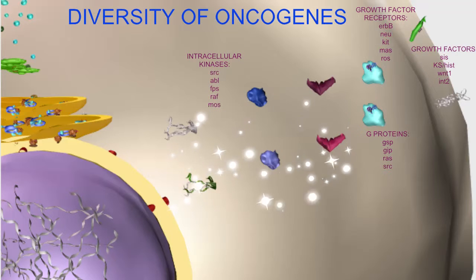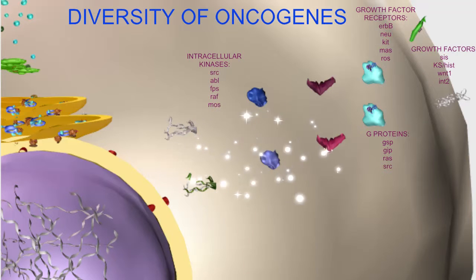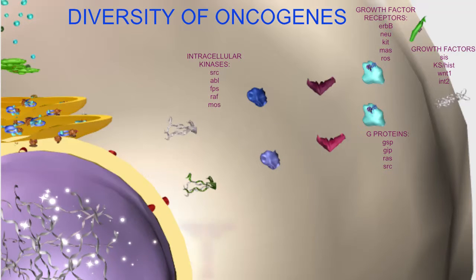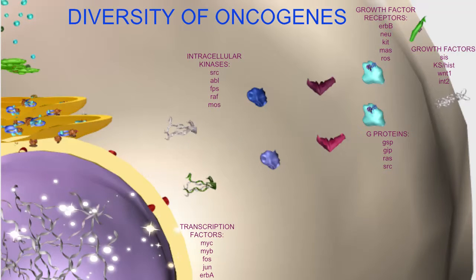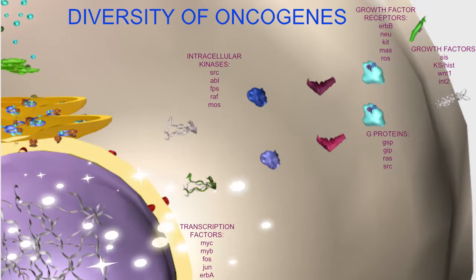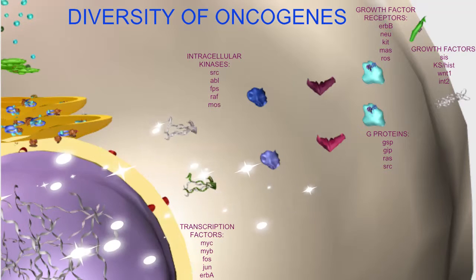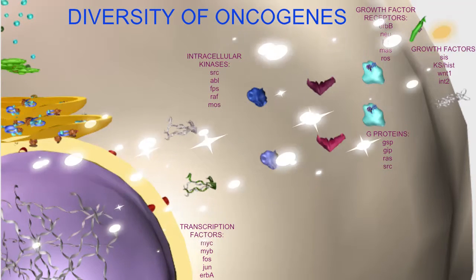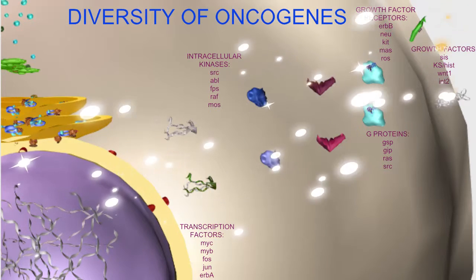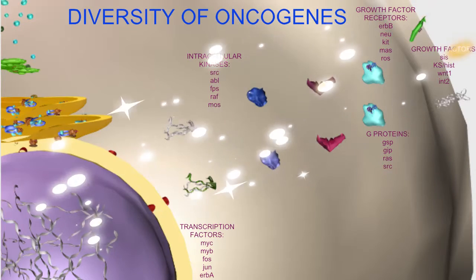Some oncogenes are mutated forms of the kinases involved in the signal transduction of these messages. Some oncogenes are mutated forms of the transcription factors active in the nucleus which activate the genes for cell division. So there is a great diversity in the potential proto-oncogenes which can be mutated into the cancer-causing oncogenes.